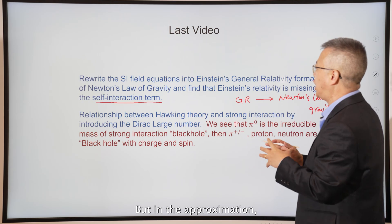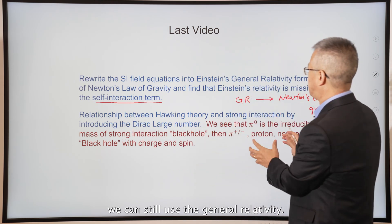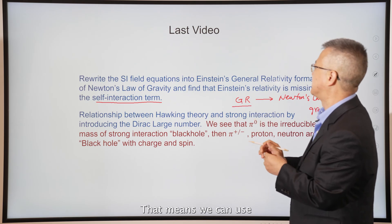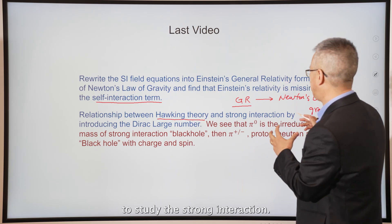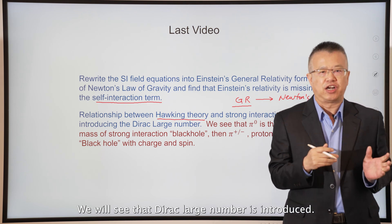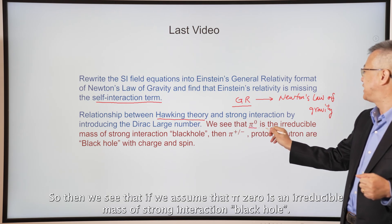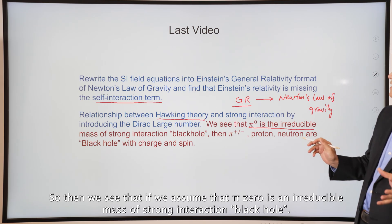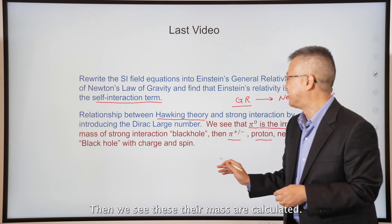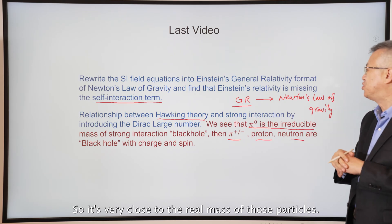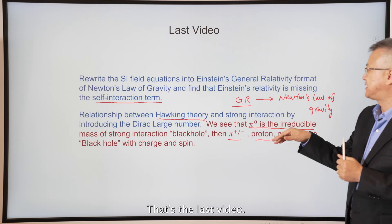In the approximation, we can still use general relativity — meaning we can use Hawking theory for black holes to study the strong interaction. We introduced the Dirac large number. Assuming pi-zero is an irreducible mass of a strong interaction black hole, the calculated masses are very close to the real masses of those particles.